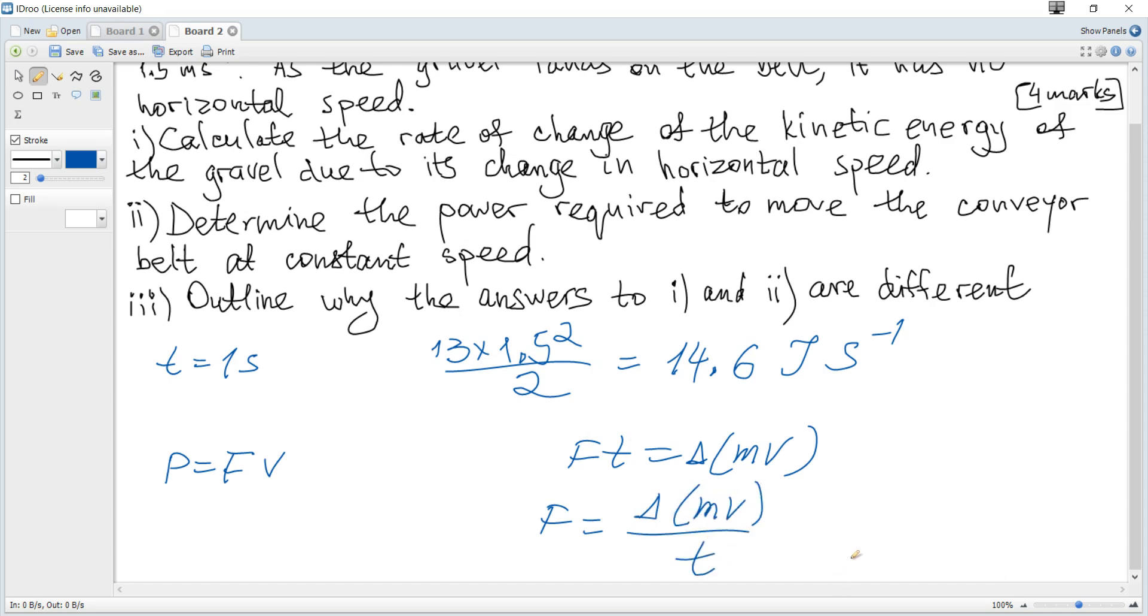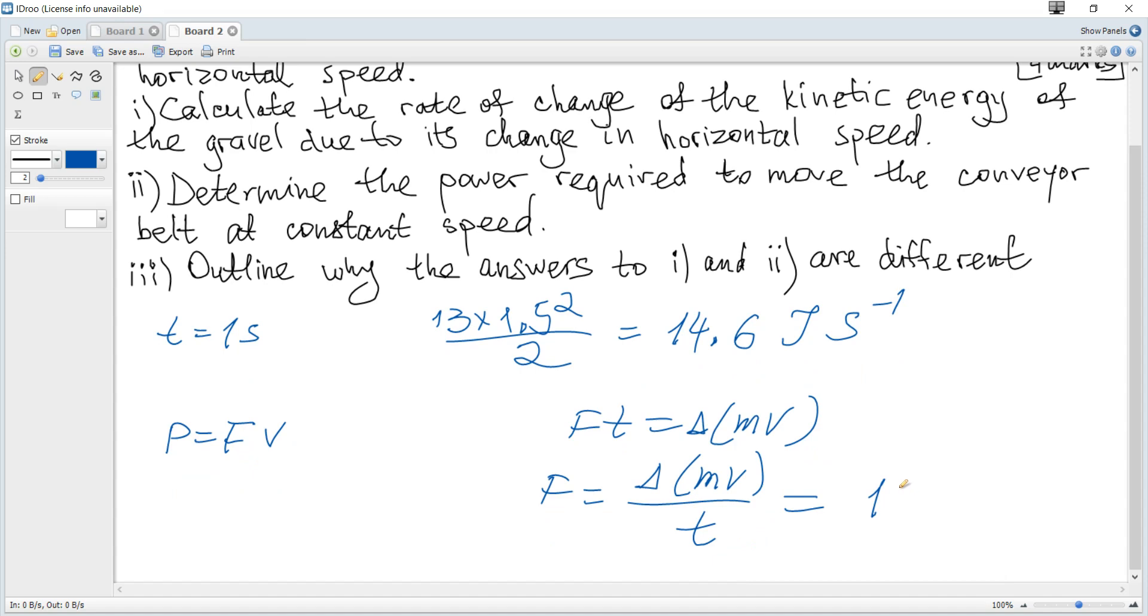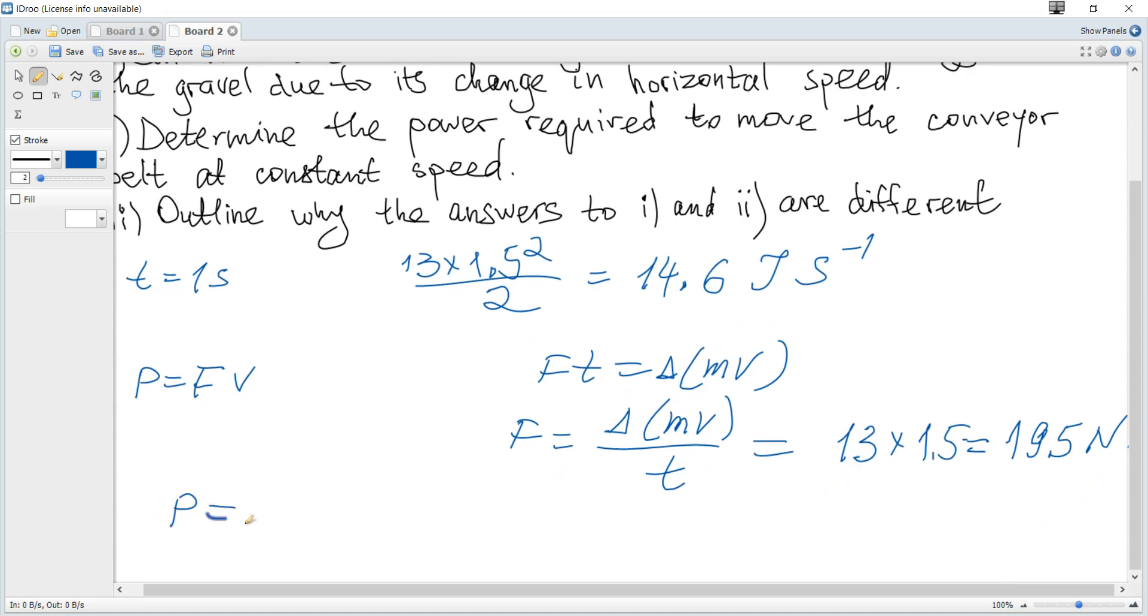Change in momentum during one second equals mass is 13 for one second and the speed is 1.5. Hence, the final momentum is 13.5, initial is zero. Hence, changing momentum is 13 multiplied by 1.5 which is equal to 19.5 newtons. And hence, power is 19.5 multiplied by 1.5 which is equal to 29.3 watts.